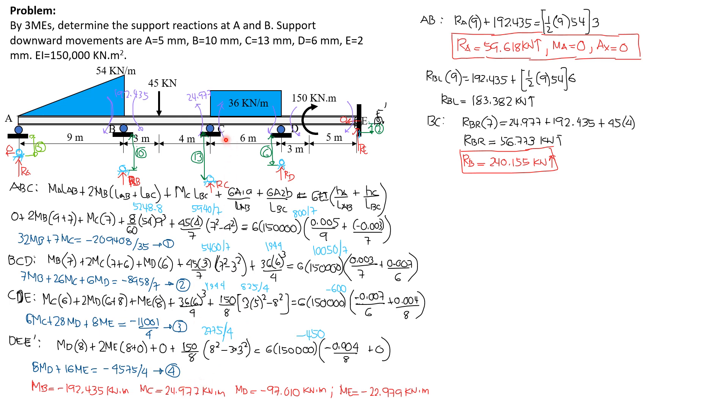Moment at C is positive, so counterclockwise just to the left, clockwise just to the right of C, 24.977. Summation moment B equals 0, considering AB, RA times 9 plus 192.435 equals the moment of the load, 1 half of 9 times 54, 1 third of 9 is 3. So RA is 59.618 kN upward, moment at A is 0, we know that, and AX is 0.